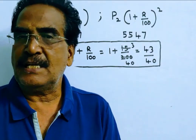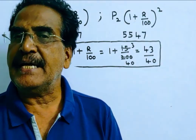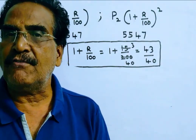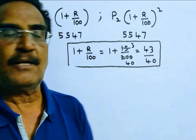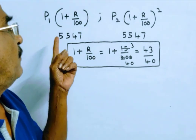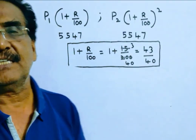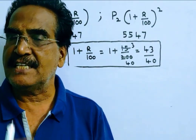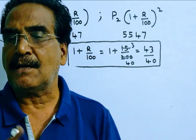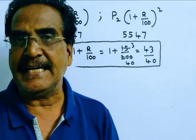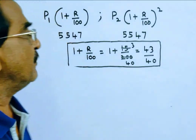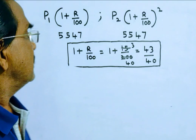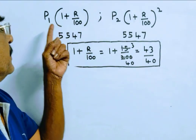Surekha has borrowed a sum of money and paid back in two equal annual installments of 5,547 at the rate of 7.5% compounded annually. Our question is: what is the sum borrowed?